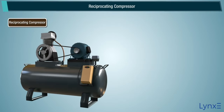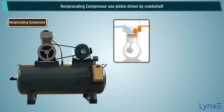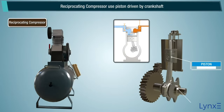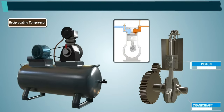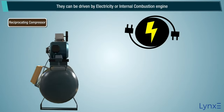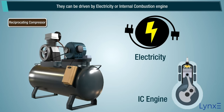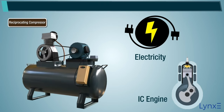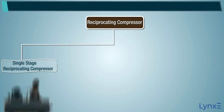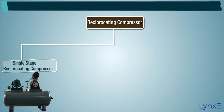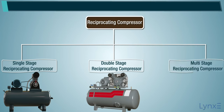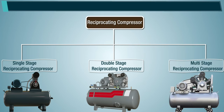Reciprocating Compressors use a piston driven by a crankshaft. They can be driven by electricity or an internal combustion engine. Reciprocating compressors are also classified as Single Stage, Double Stage, and Multi Stage Reciprocating Compressors.